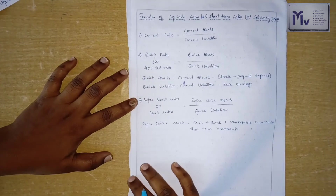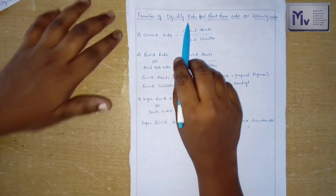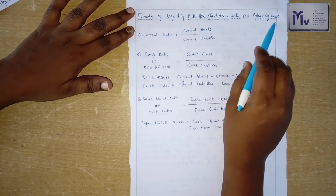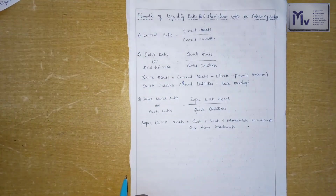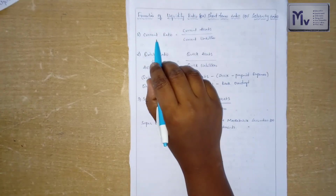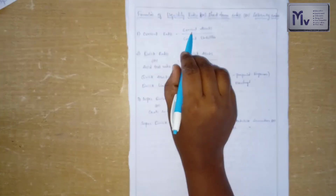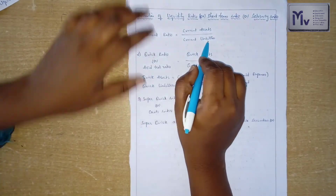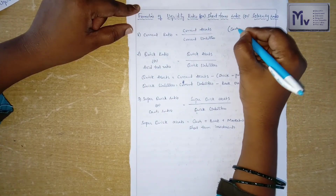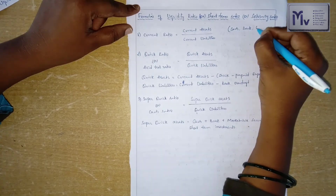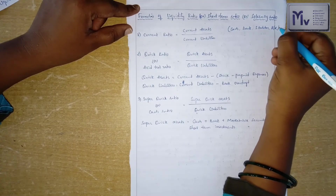These are the formulas for calculation of liquidity ratio — also called short-term ratio or solvency ratio. The first formula is current ratio: current assets divided by current liabilities. Current assets include cash, bank, sundry debtors, bills receivable, etc.